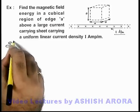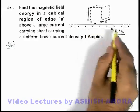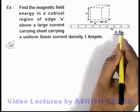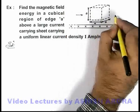Here in this problem we can see that in this large sheet, the cross section of the sheet is shown. The linear current density is I ampere per meter, due to which a magnetic induction exists from left to right.